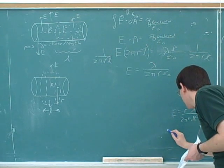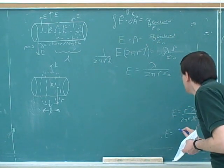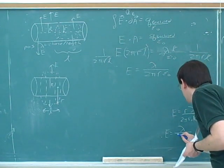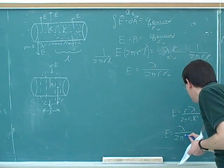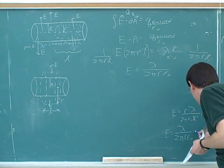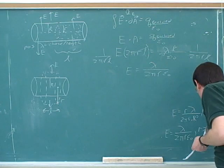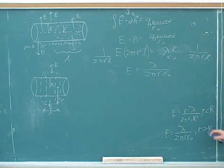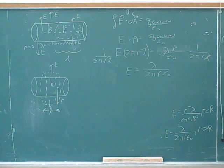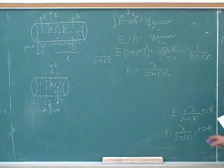So we can add that to our list here. Now we have E equals lambda over 2 pi r epsilon zero. This is the case now where little r is bigger than big R. So again, you're doing a good job of not getting confused between little r and big r. Little r is our Gaussian surface, and big R is the actual cylinder of charge.